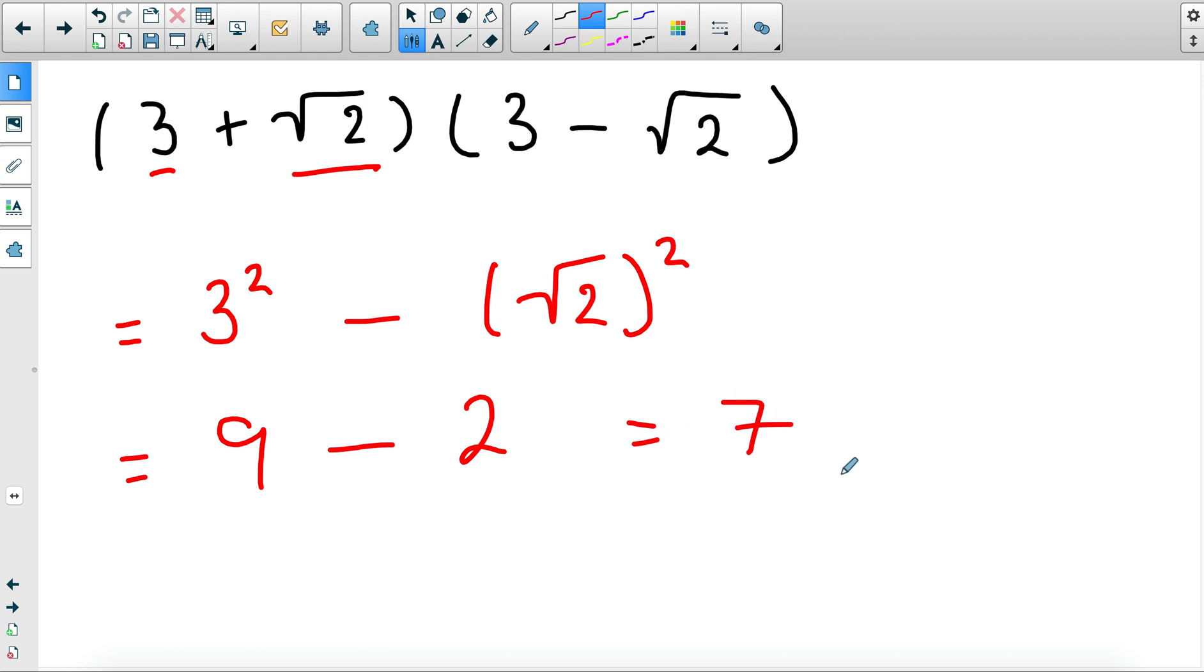You could have gone through the normal expansion; they would have cancelled out and you would have ended up with the same. You would have ended up with this when the middle terms cancel out and again simplify it to a 7. But remember that difference of two squares is quite useful in these instances. So I hope this video was useful, and the last video on surds will be about rationalizing the denominator.